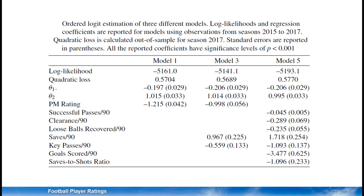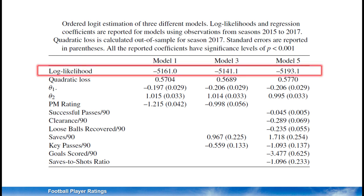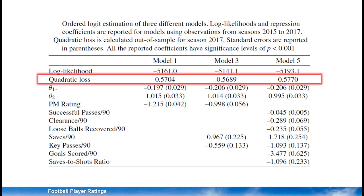Model 1 is our benchmark — a model using only the plus-minus ratings of players when predicting match results. Model 2, not reported in detail, contained the plus-minus ratings plus 31 covariates based on different KPIs. Model 3, which is reported, is based on Model 2 but after we performed recursive feature elimination based on the Bayesian information criterion. Models 4 and 5 correspond to Models 2 and 3 but without plus-minus ratings among the covariates. We report the log likelihood as an in-sample measurement and the quadratic loss measured out of sample using a validation set. We prefer the more parsimonious Models 3 and 5, as Models 2 and 4 had many insignificant regression coefficients.